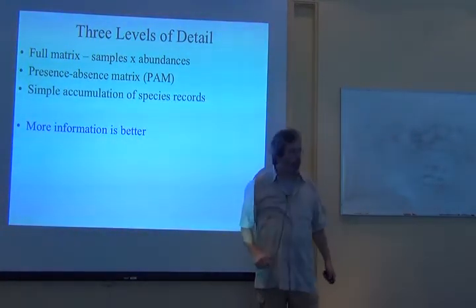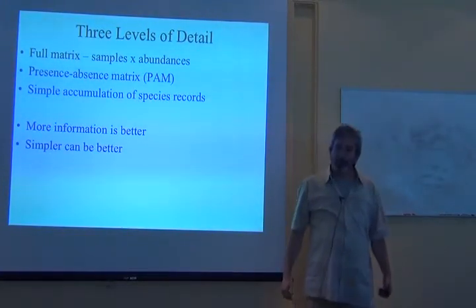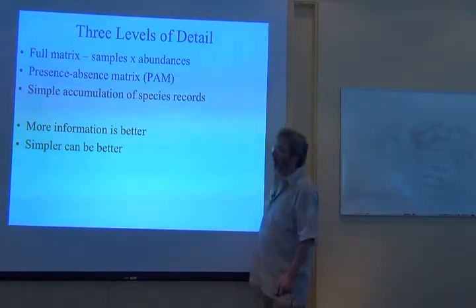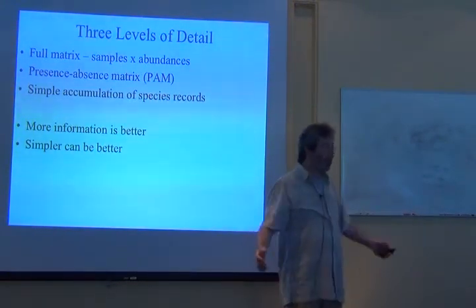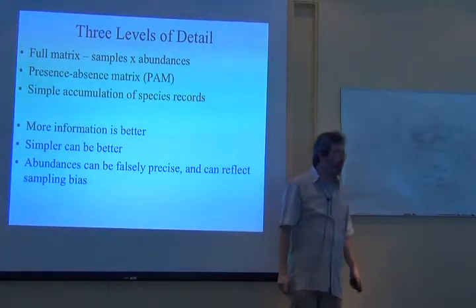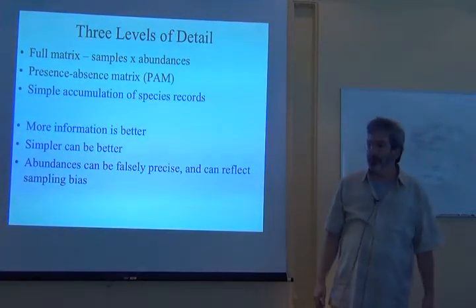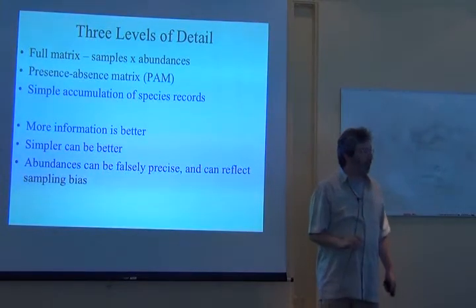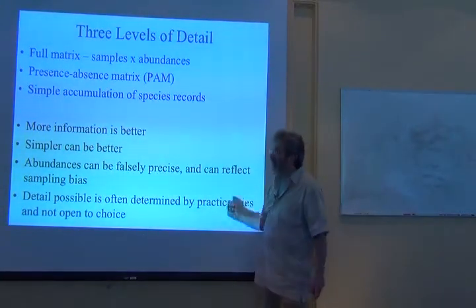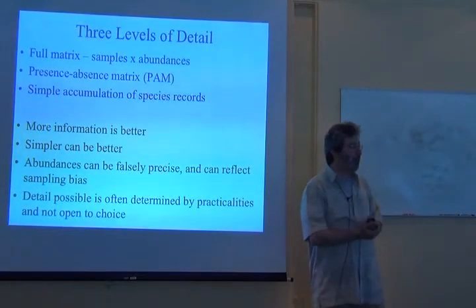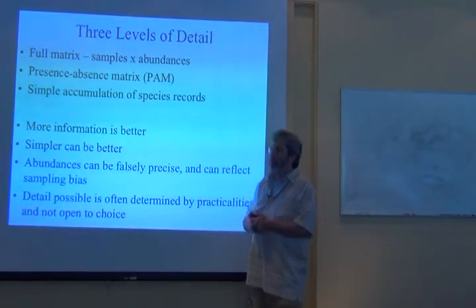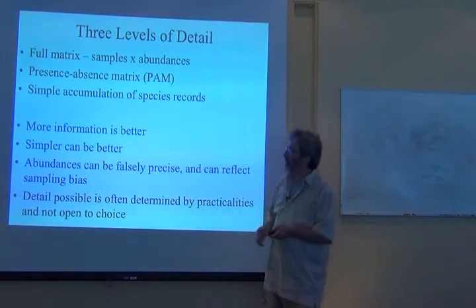In general, we might think that more information is better, but sometimes a simpler, more robust analysis that's less vulnerable to bias or false detail — sometimes that can be better. My worry is that abundance data will frequently be falsely precise, but if you're in a situation where you trust your abundance information, great. The amount of data we can use in these analyses is often determined by practicality and not by choice.